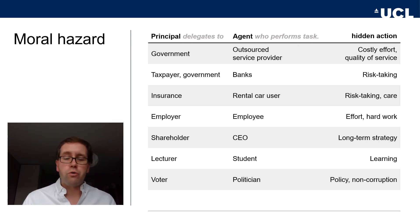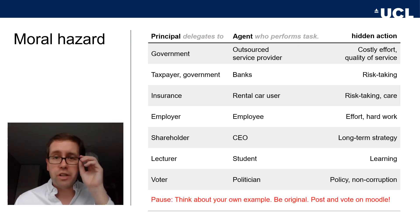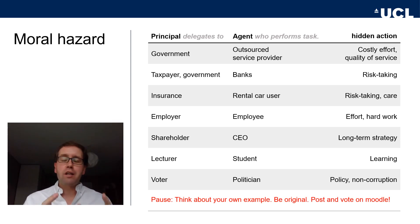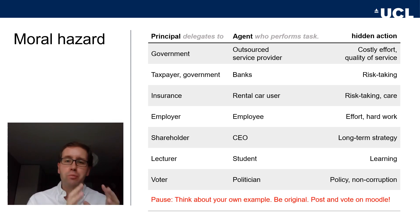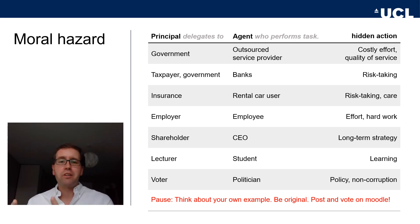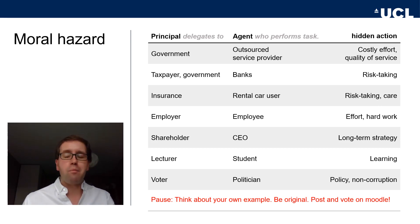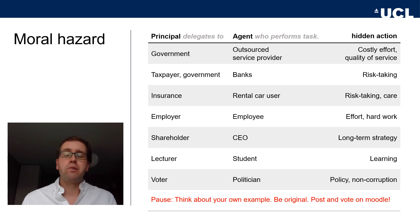I want you to pause the video now and think about your own example. Think about a principal-agent problem where there's moral hazard — a principal who delegates a task to an agent who performs this task but there's hidden action that determines the outcome. Think of your own original example, post it on Moodle, and vote up the good examples from your classmates.